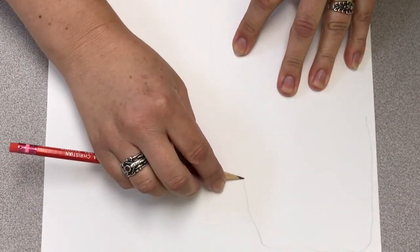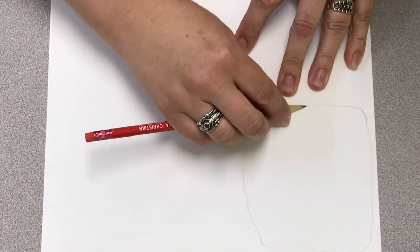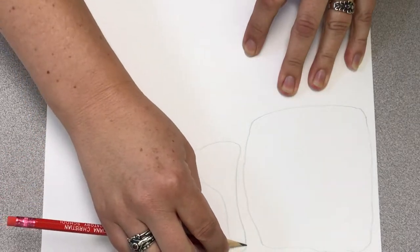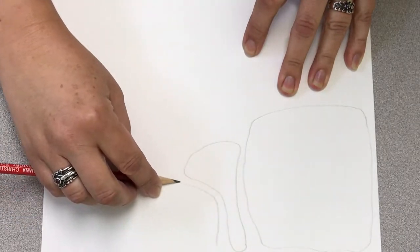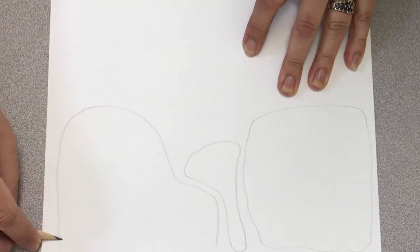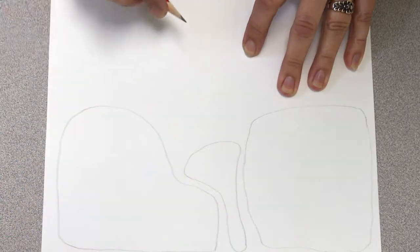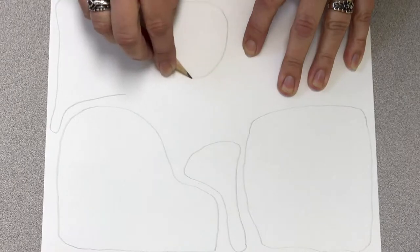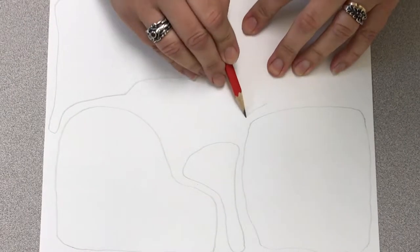Notice how I'm not holding my pencil straight up and down. I'm holding it at an angle very close to the paper to get a softer line, so that if I do need to erase a line, it's not as difficult as if you have a dark hard line on the paper.